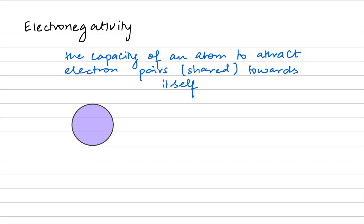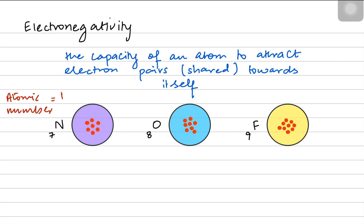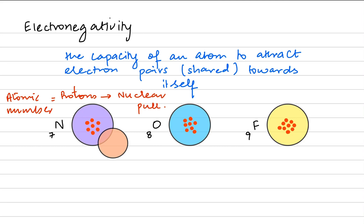Imagine a nitrogen atom on the left side of the diagram, an oxygen atom in the middle, and a fluorine atom on the right. Nitrogen has seven protons inside the nucleus, oxygen has eight protons, and fluorine has nine protons. We know this because these are their atomic numbers, which show how many protons are inside their nucleus. More protons create more nuclear pull. All these atoms are from period two, so they have the same number of shells, and if they bond with a hydrogen atom each, everything depends on the nuclear pull by nitrogen, oxygen, and fluorine.